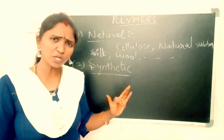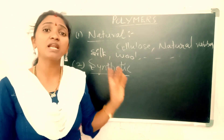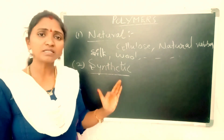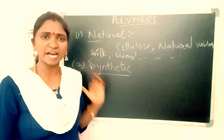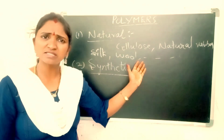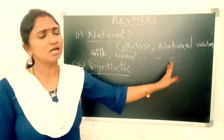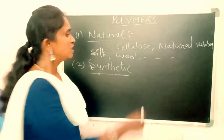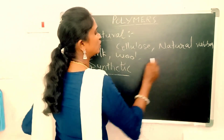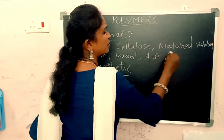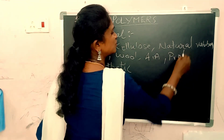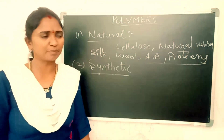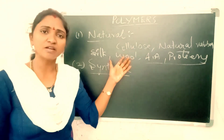Natural polymers are directly obtained from plants and animals — for example silk, wool, and so on. Amino acids and proteins are also examples of natural polymers, and they are very big molecules.